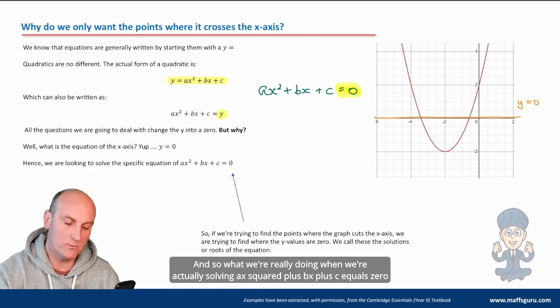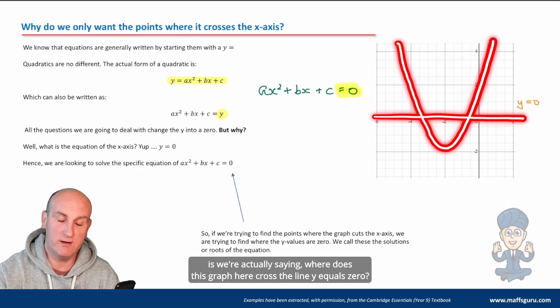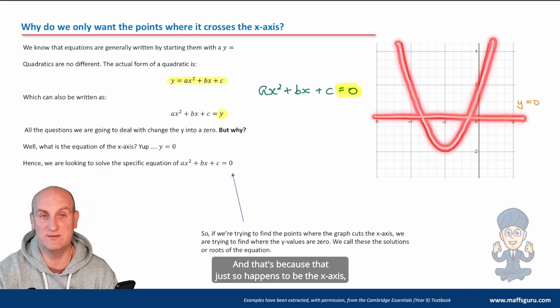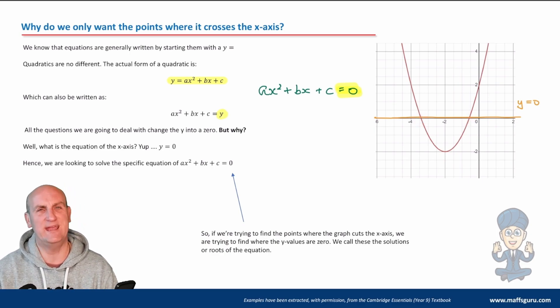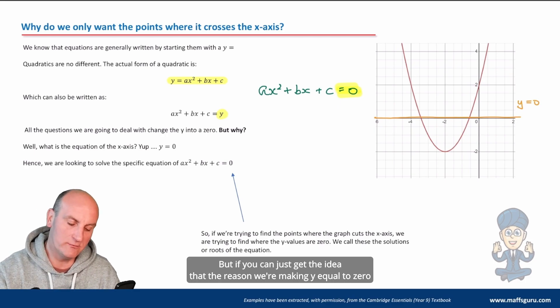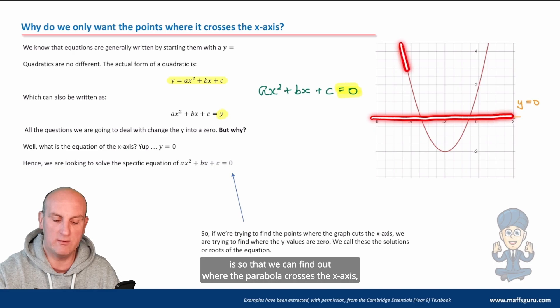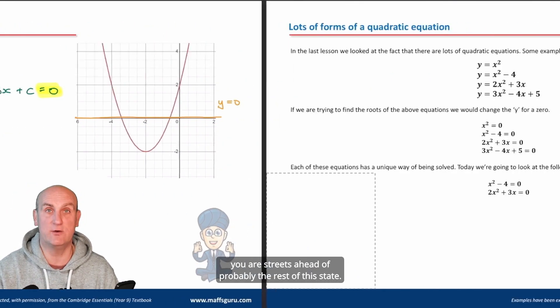And so what we're really doing when we're actually solving ax squared plus bx plus c equals zero is we're actually saying, where does this graph here cross the line y equals zero? And that's because that just so happens to be the x-axis, then we call these things here our solutions. Again, there's way more to this than that. But if you can just get the idea that the reason we're making y equal to zero is so that we can find out where the parabola crosses the x-axis, you are streets ahead of probably the rest of this state.